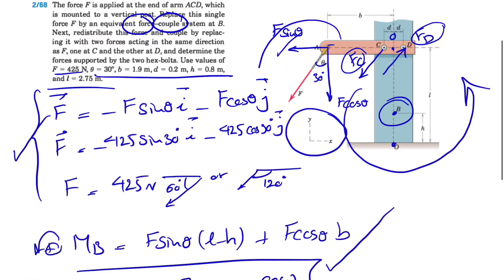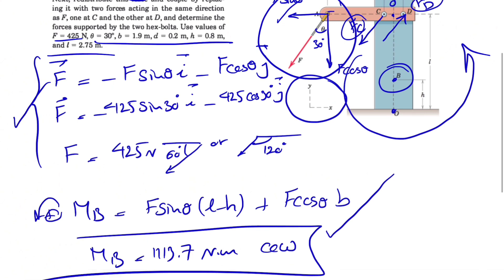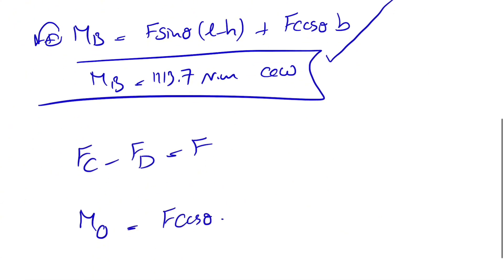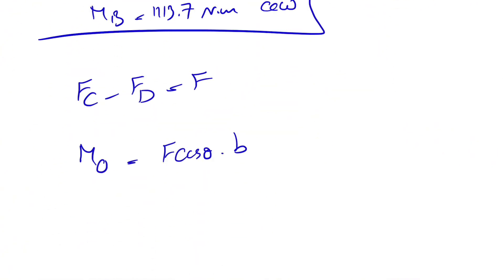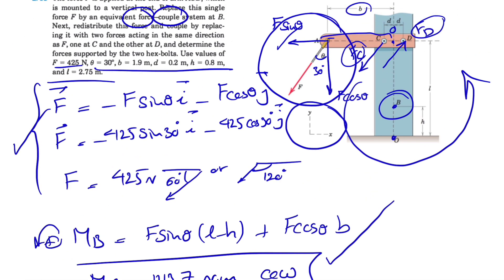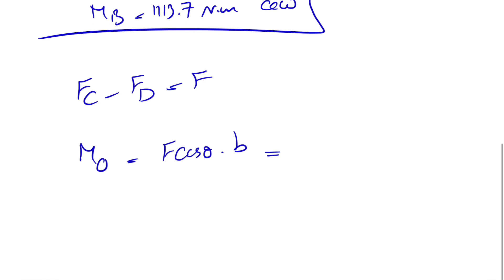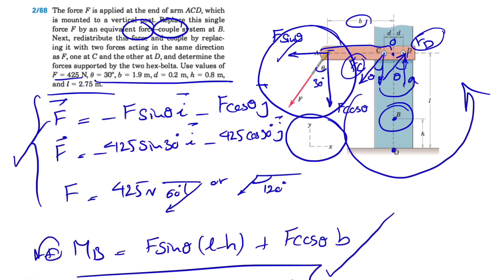For the moment about point O: the moment from F is F cosine theta times the distance from O to A, which is B. That must equal the moment from Fc and Fd. Since each force is in the same direction as F, we only need the cosine theta component. Fc cosine theta times its distance from O to C, and Fd cosine theta times its distance from O to D — each distance is D.